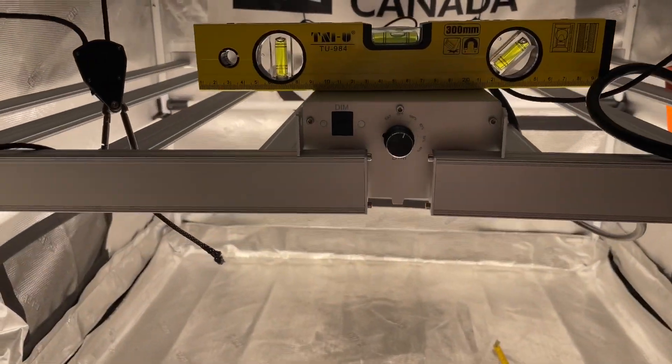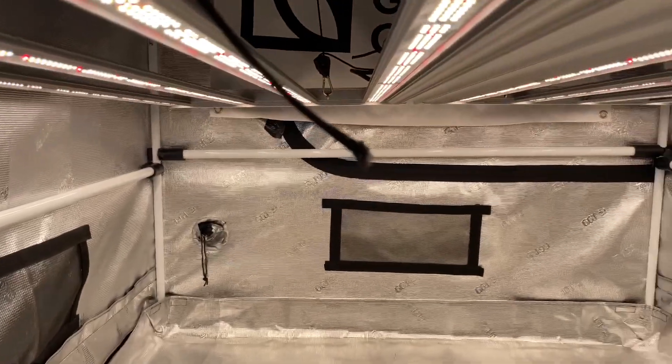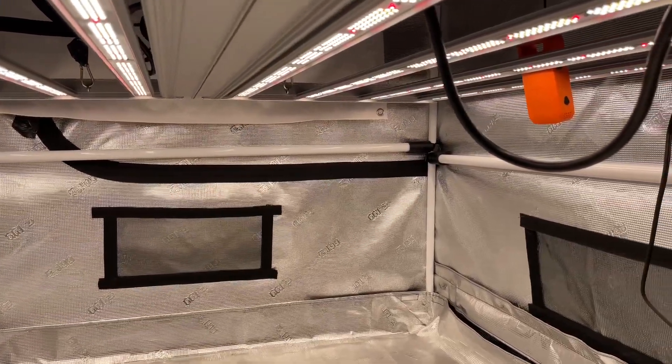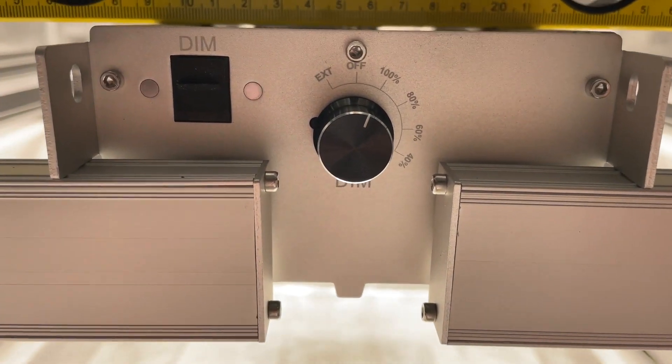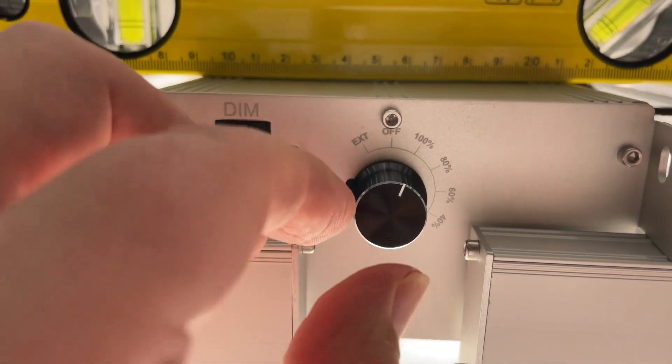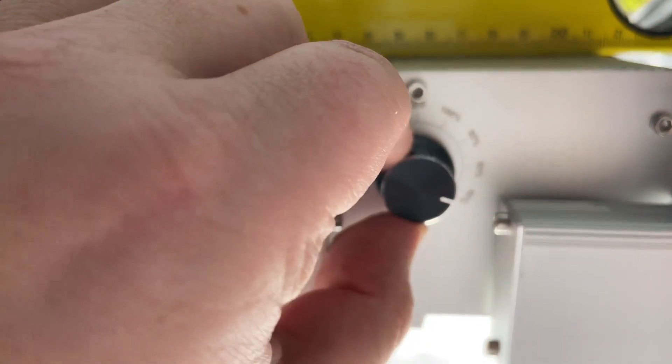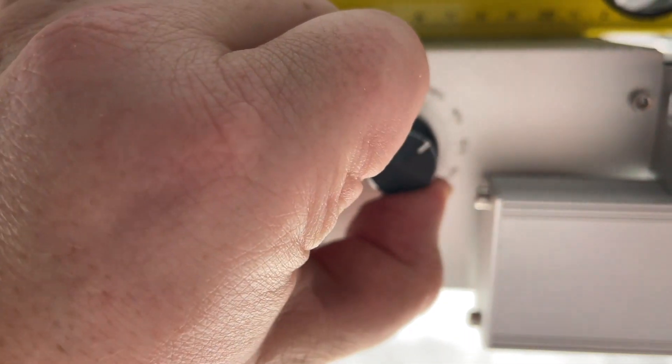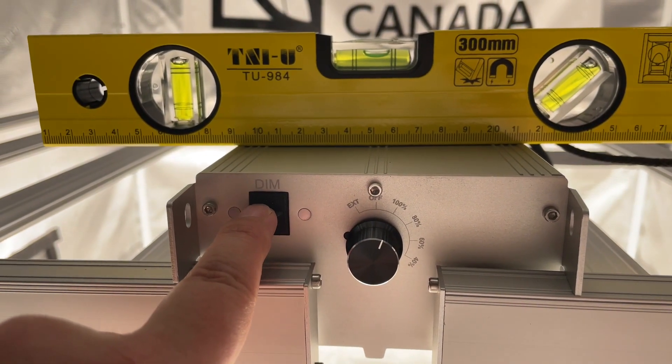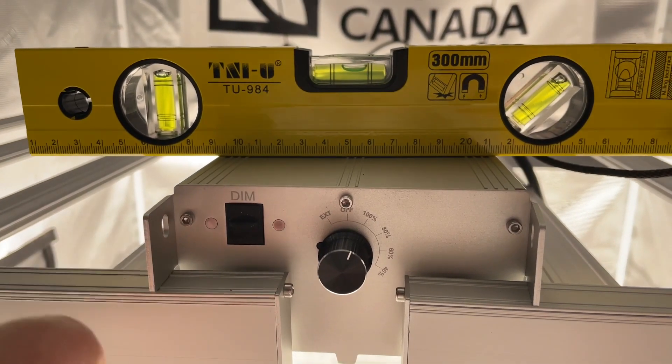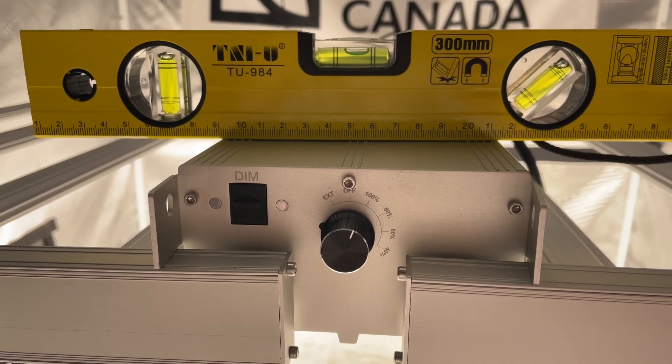So here we are, I have the light hung in here. This is in a 4x4 tent. I have it at 100. As you can see, it dims from 100 to 80 all the way down to 40 and off. And then it's got your extension where you hook that line there into another light and you can dim them together.